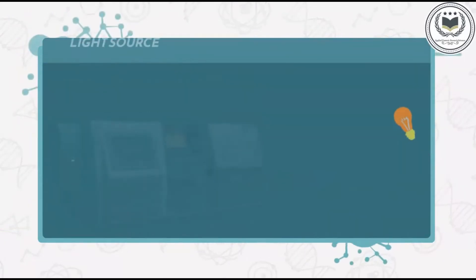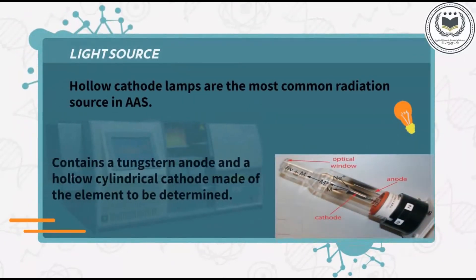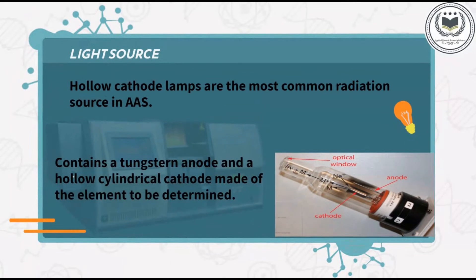Hollow cathode lamps are the most common radiation source in AAS. We need a continuous source of radiation in the AAS instrument. The extreme narrowness of the absorption line in the sources causes problems, so we use a hollow cathode glow discharge lamp to give sharp emission lines for a specific element in atomic absorption spectroscopy instrumentation.